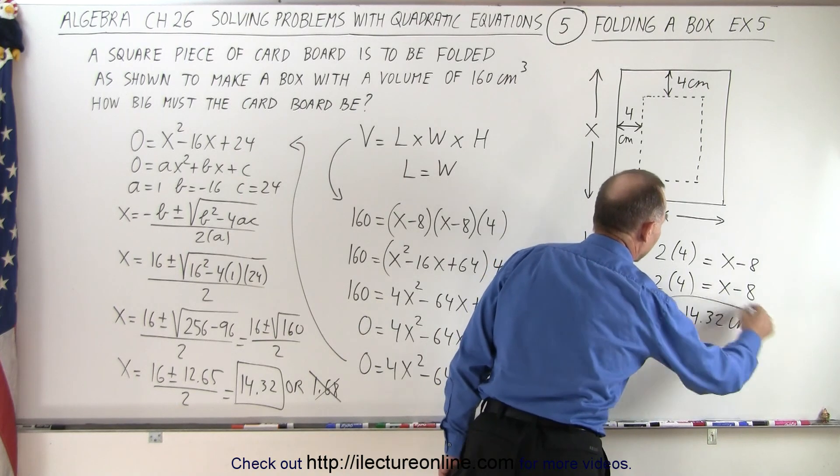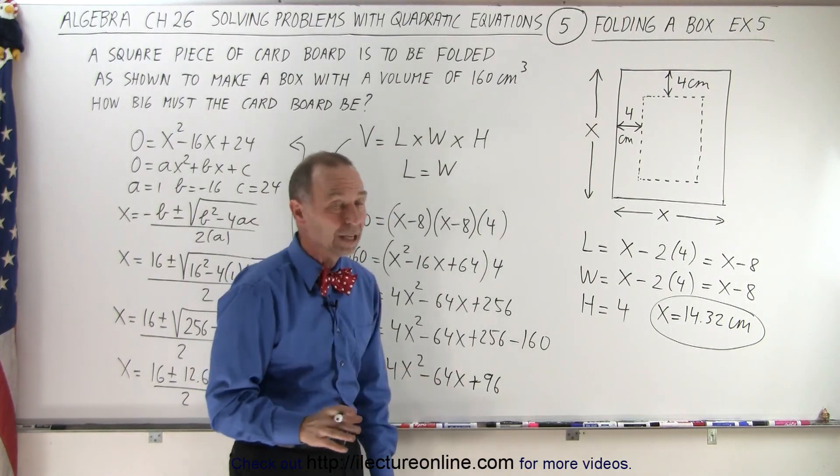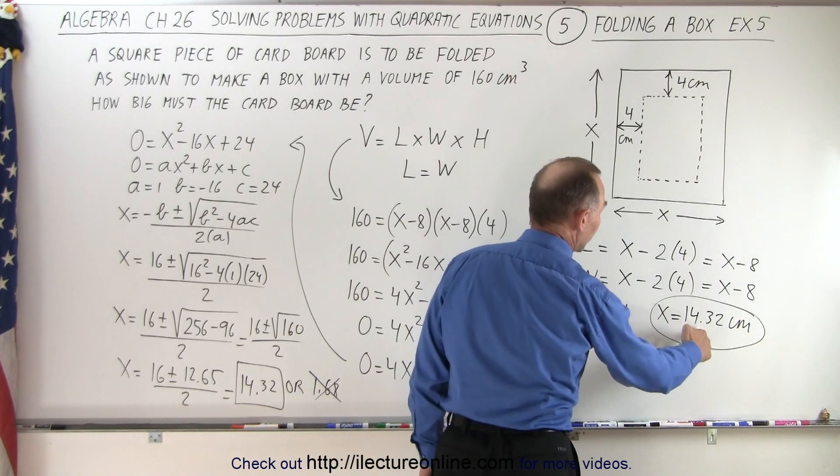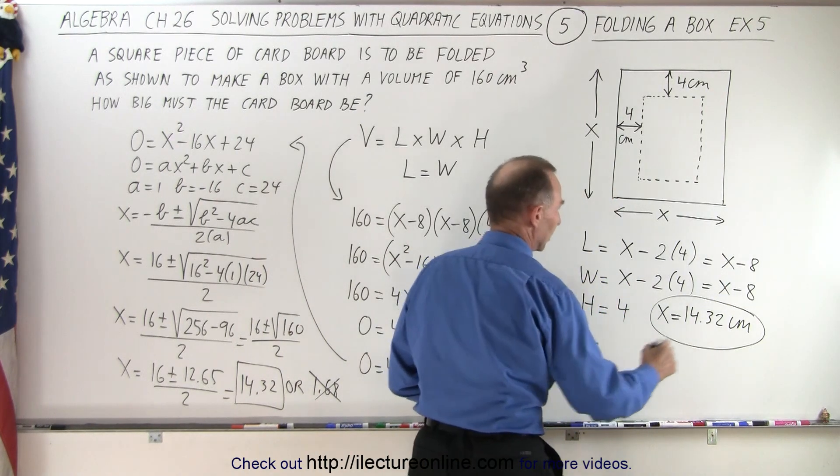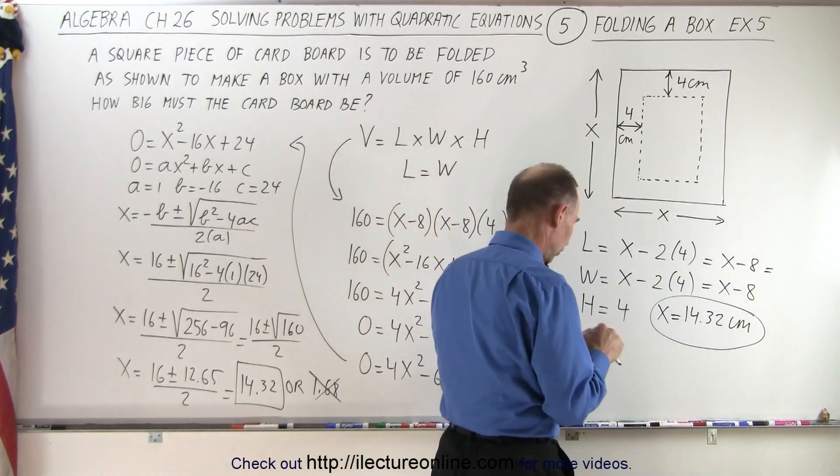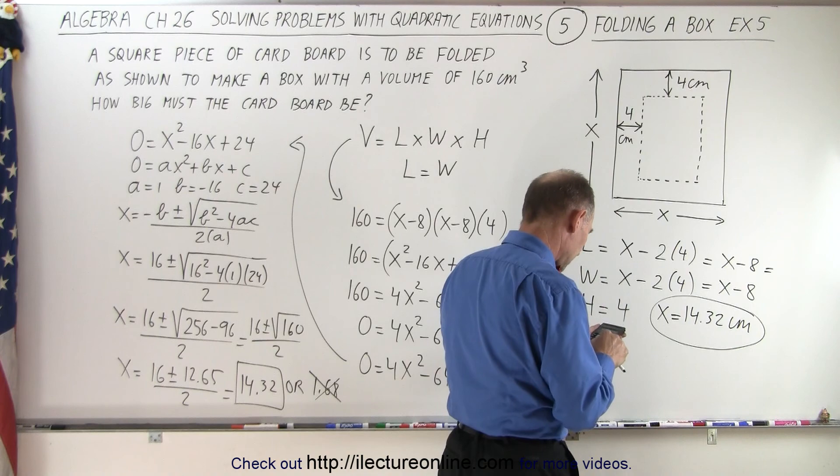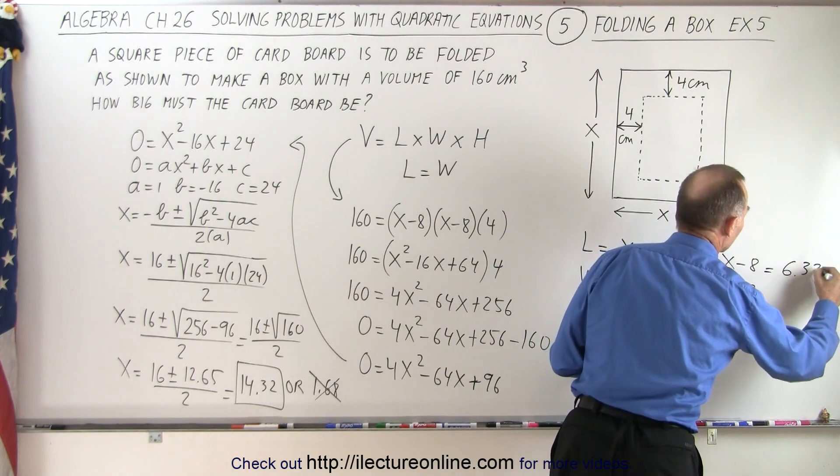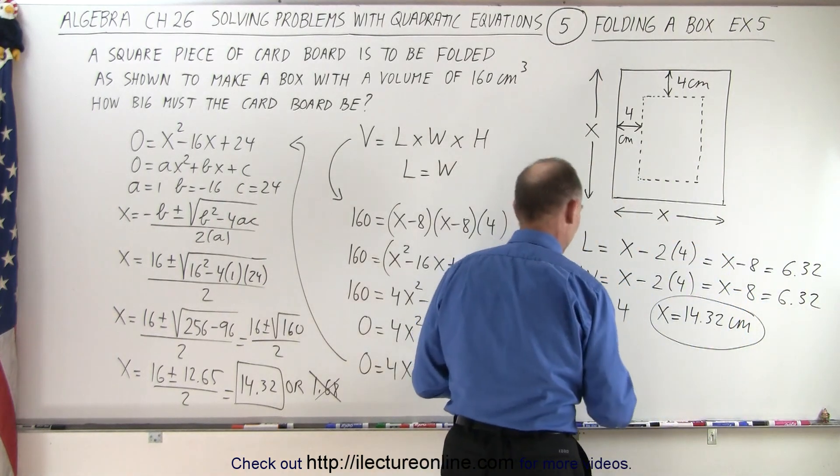Now if that's the case, then do we indeed end up with a box of 160 cubic centimeters? So let's try it and see what we get. So 14.32 minus 8, so that means that the length is equal to, and actually we can put that over there, so 14.32 minus 8 equals, that's 6.32. So 6.32, 6.32, and the height is 4.